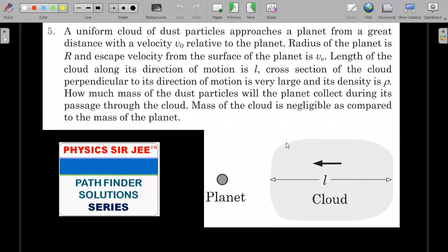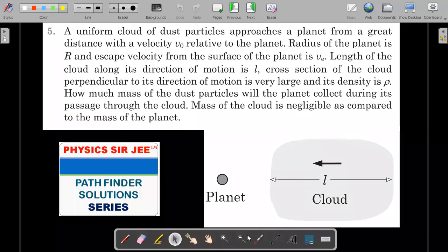A uniform cloud of dust particles approaches a planet from a great distance with a velocity v0 relative to the planet. Radius of the planet is capital R and escape velocity from the surface of the planet is v subscript e. Length of the cloud along its direction of motion is L. Cross section of the cloud perpendicular to its direction of motion is very large and its density is rho. How much mass of the dust particles will the planet collect during its passage through the cloud. Mass of the cloud is negligible as compared to the mass of the planet.